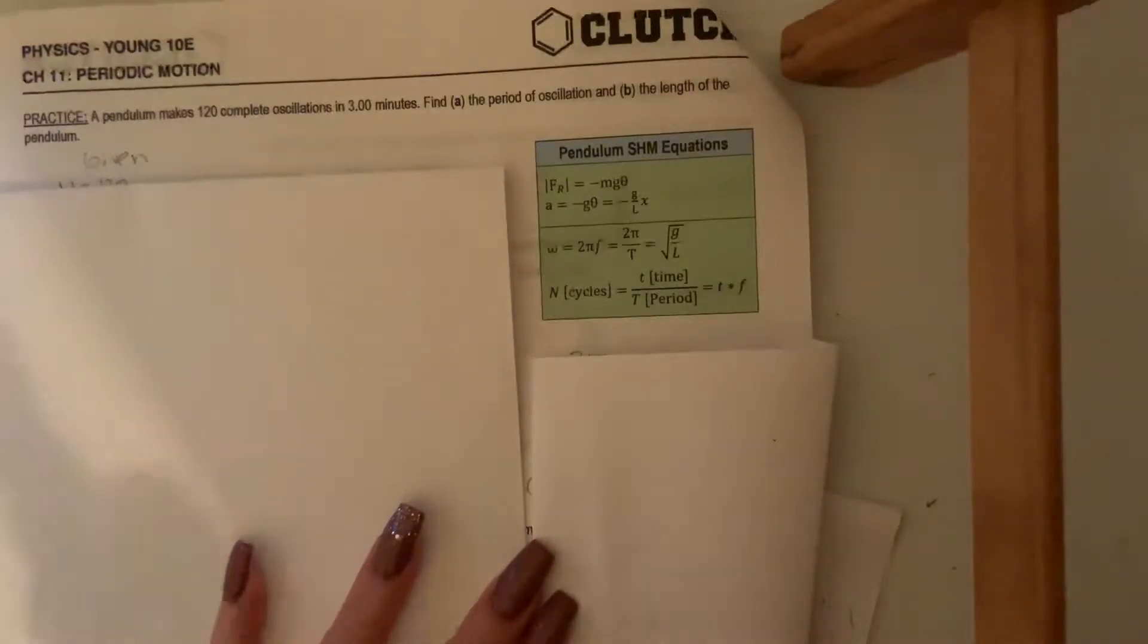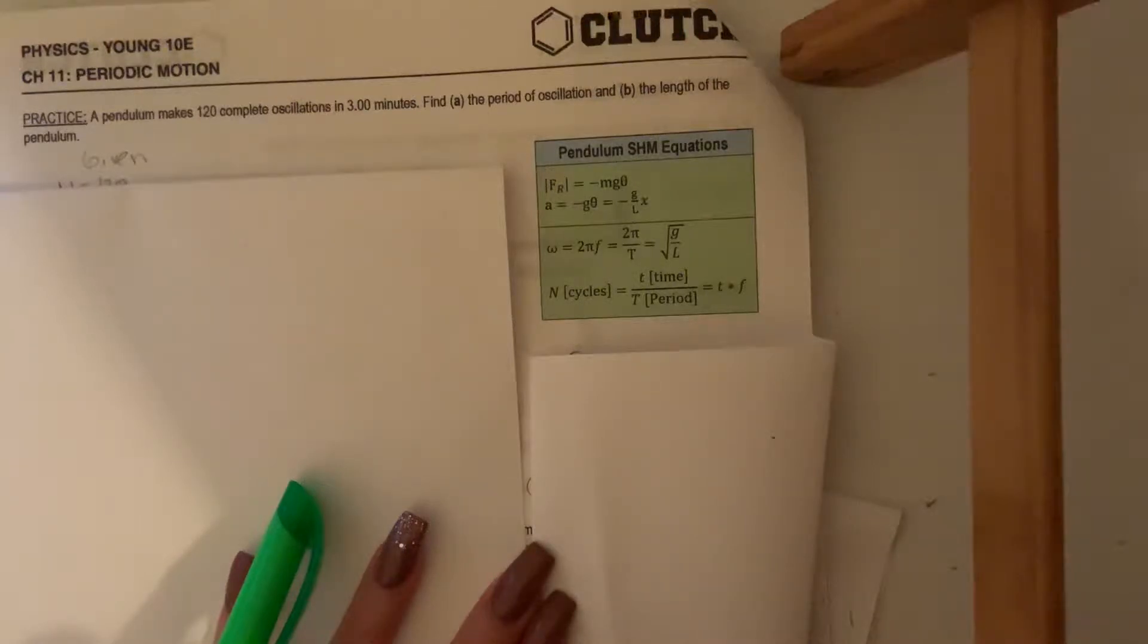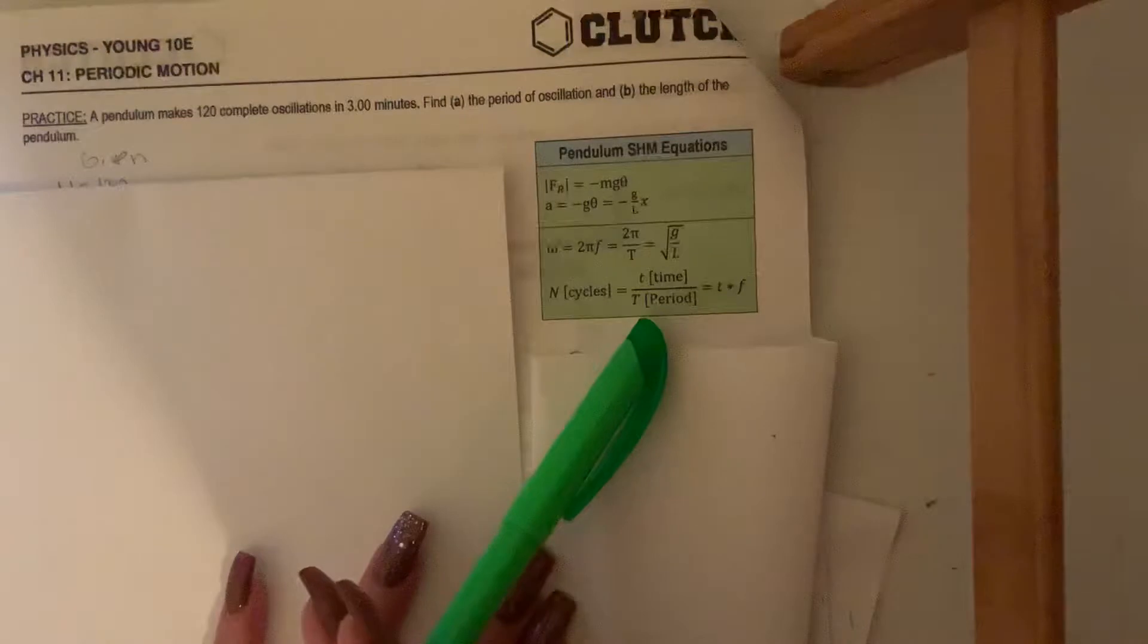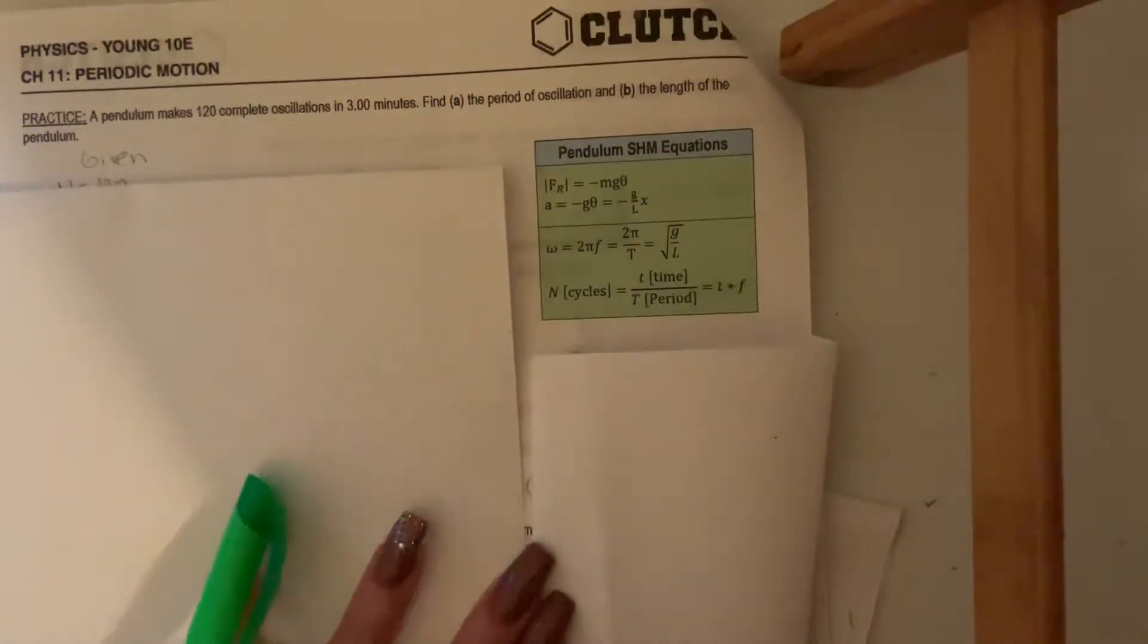All right, in this case we're using a pendulum, so the formal equation change the variables. We have that a pendulum makes 120 complete oscillations in three minutes. Remember it has to be in seconds, so we need to convert that in seconds. We need to find the period and the length of the pendulum.